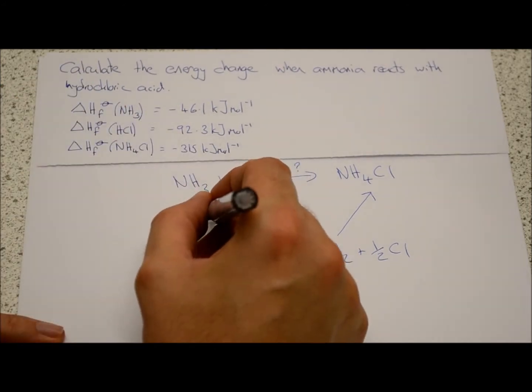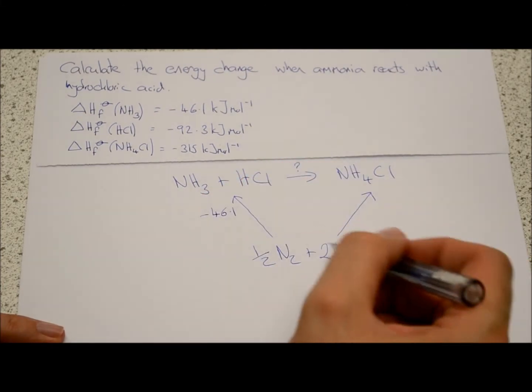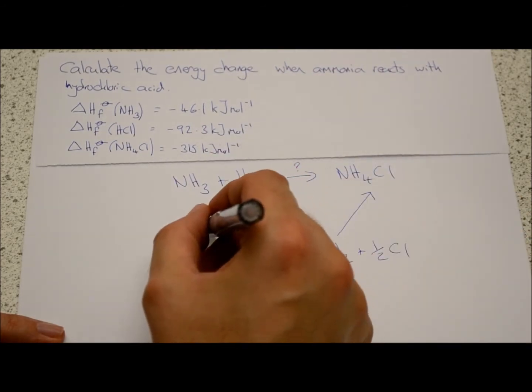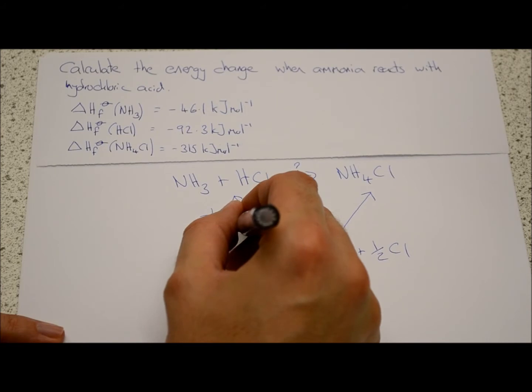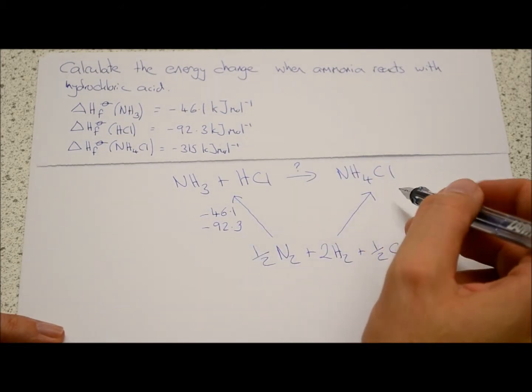So that's minus forty-six point one. Also we need to make one mole of hydrochloric acid, and that's going to be minus ninety-two point three. This side we're going to form just one molecule here.